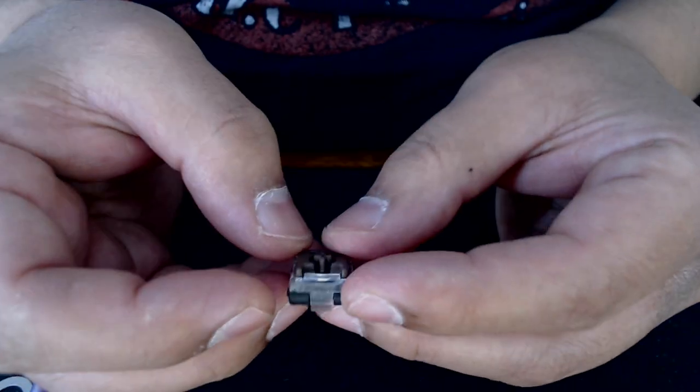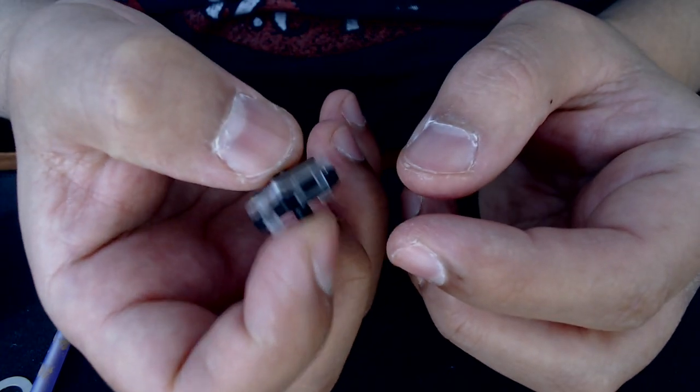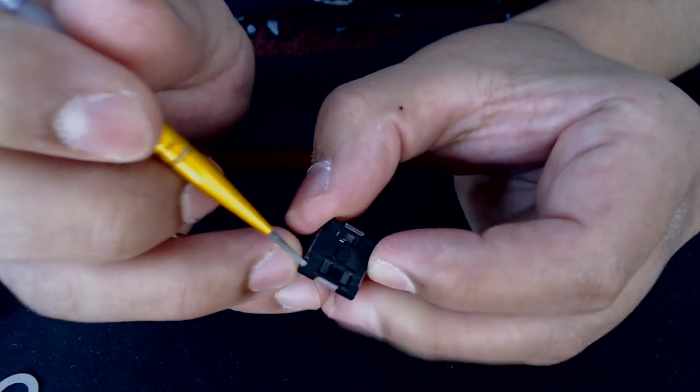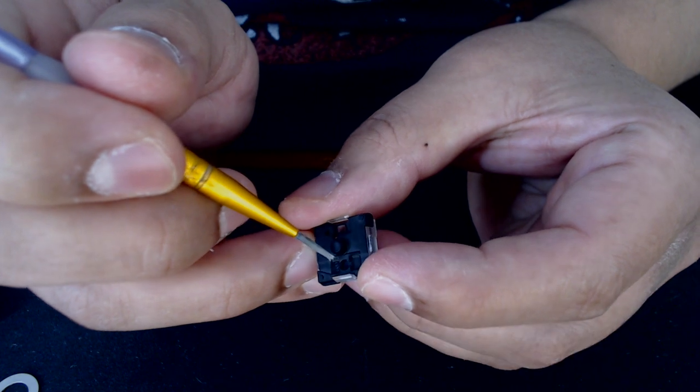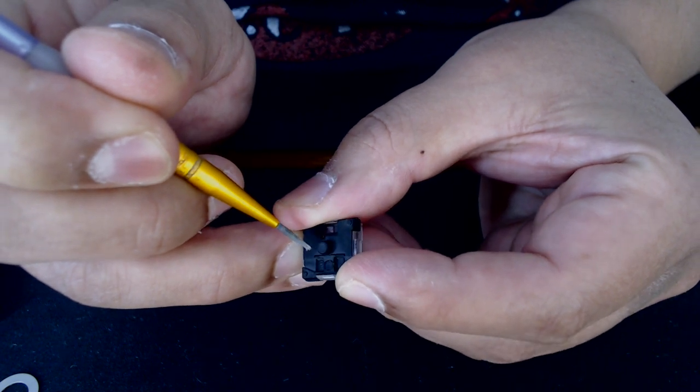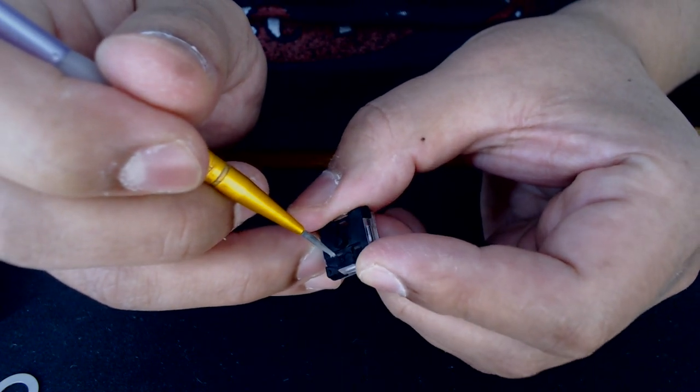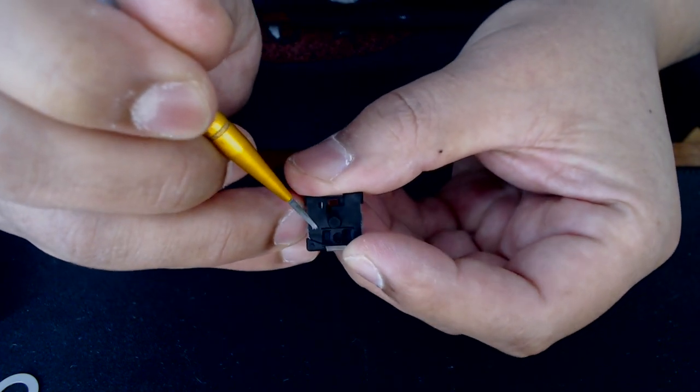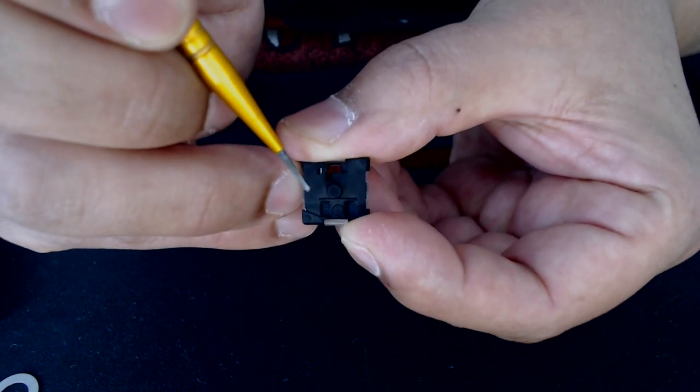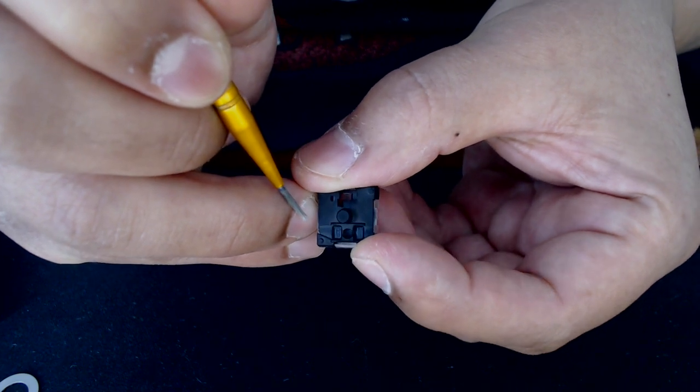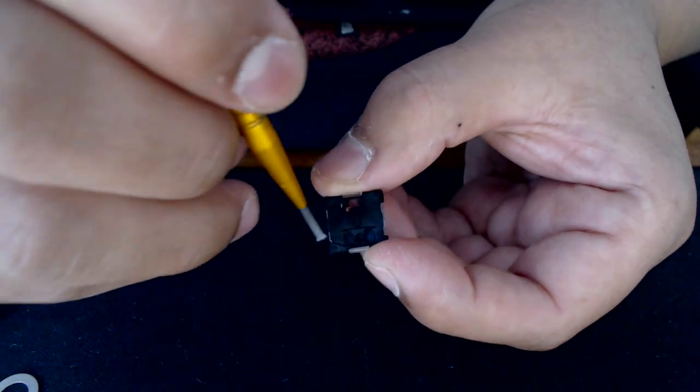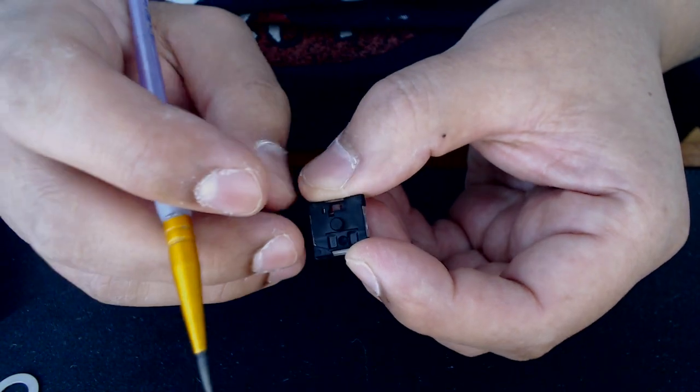The one thing you do have to be careful of is that when you're taking these apart, there's this part right here where the light goes, and when the light is blocked it registers the key. So this actually comes off very easily when you're taking these apart and lubing them. So as you're putting them back together, make sure that you're putting this back in if it falls off. And there's actually a way to put it, because it actually has a line on that little button thing, and that line has to be parallel to this side and this side. And if you put it the other way, when you push down it won't go up and down and it'll feel very mushy. And that's how you do it.